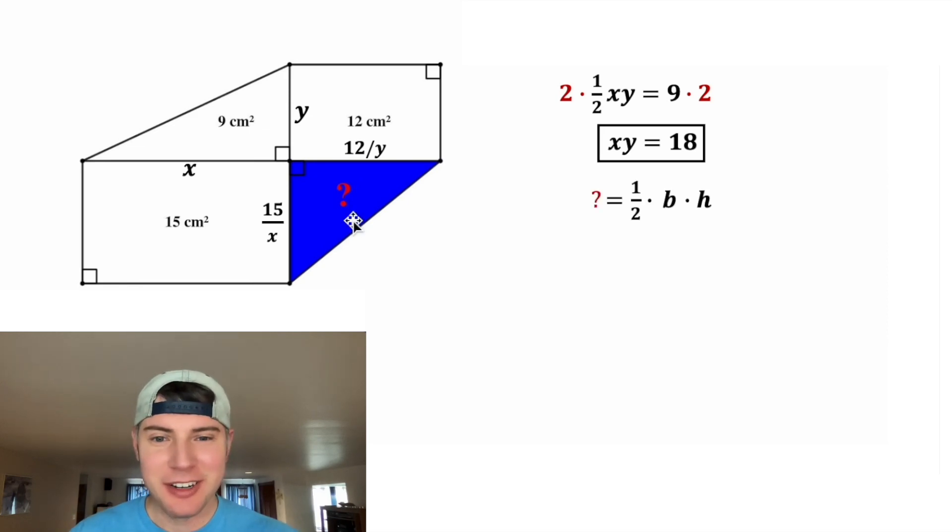Now we're ready for the question mark. Since it is the area of a triangle, it's going to be equal to 1 half base times height. And if we turn our head sideways, we can think of the base as equal to 15 over X, and the height as 12 over Y.